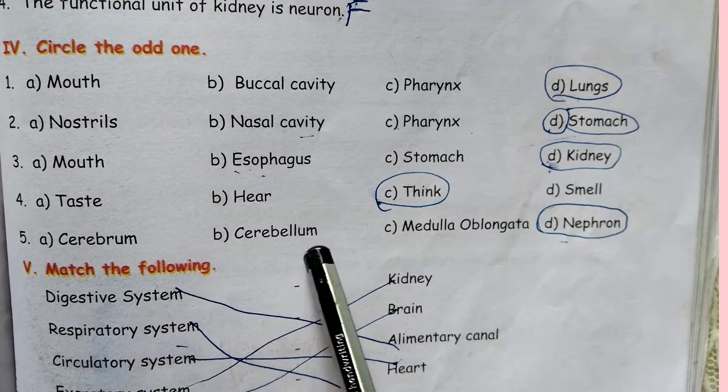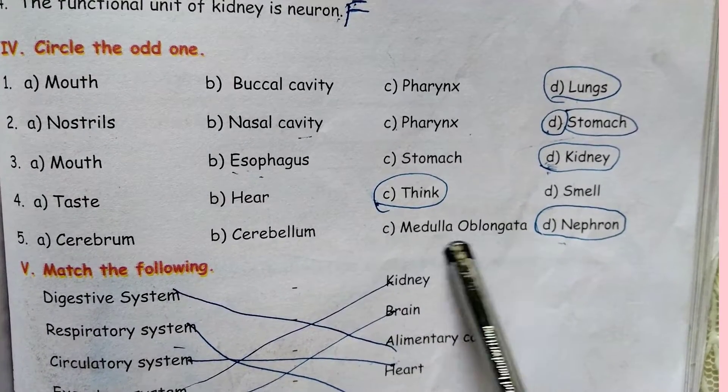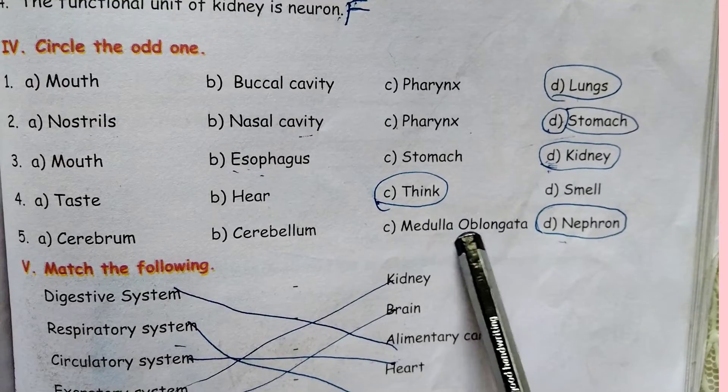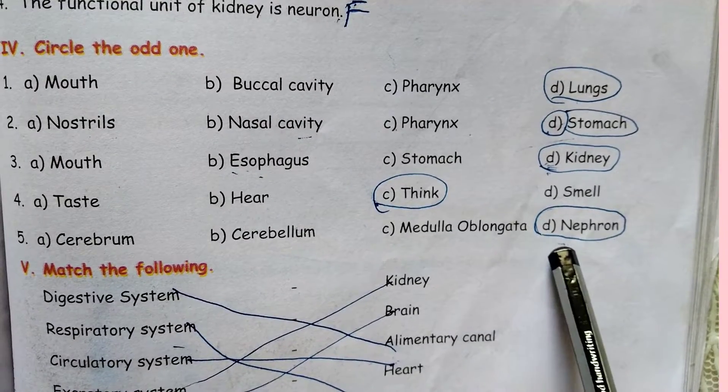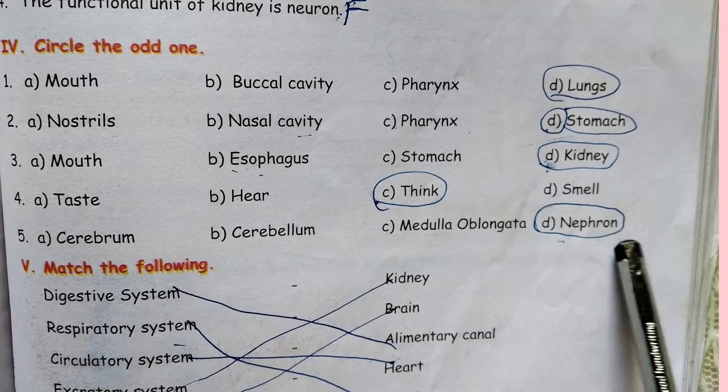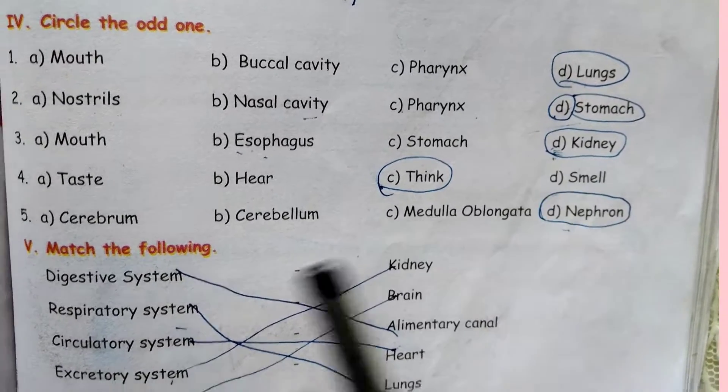Cerebrum, cerebellum, medulla oblongata, nephron — nephron is the odd one.